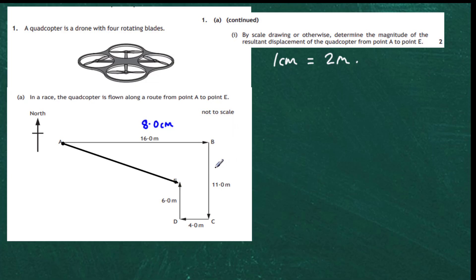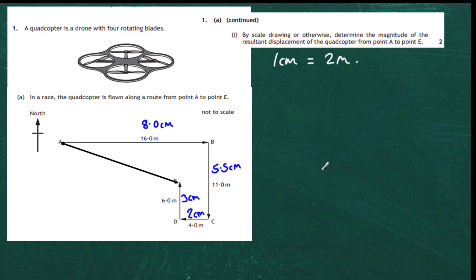11.0 metres will become 5.5 centimetres according to our scale — remember, 1 centimetre stands for 2 metres. The 4 metre length becomes 2 centimetres, and the 6 metre length becomes 3 centimetres. So we now have all our vector lengths ready to put down on paper.